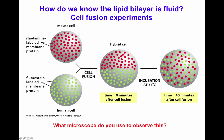Consider what would happen if instead of incubating at 37°C, we incubated at 4°C — how would reduced membrane fluidity affect the distribution of the labeled proteins? Also consider which type of microscope was used to visualize this experiment.